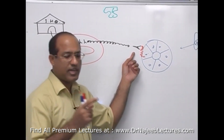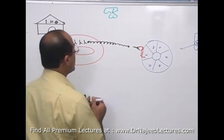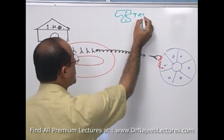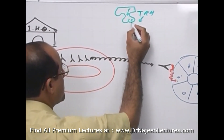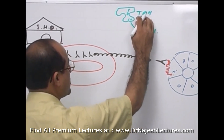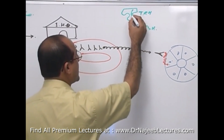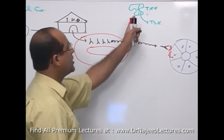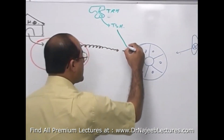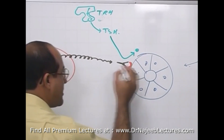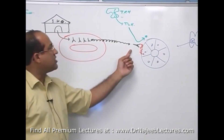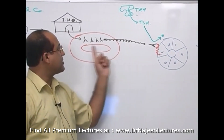Normally, the hypothalamus produces TRH, which goes to the anterior pituitary through the portal system and stimulates the release of TSH. It is this TSH that is normally supposed to stimulate the TSH receptor on the follicular cells.